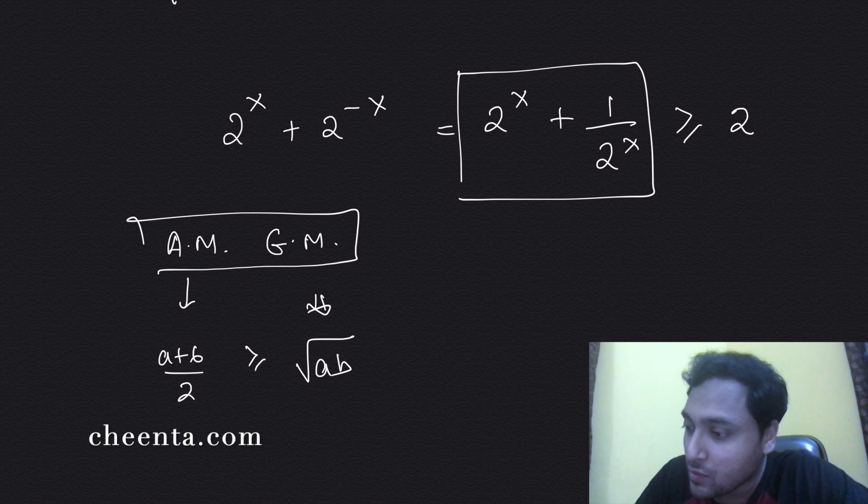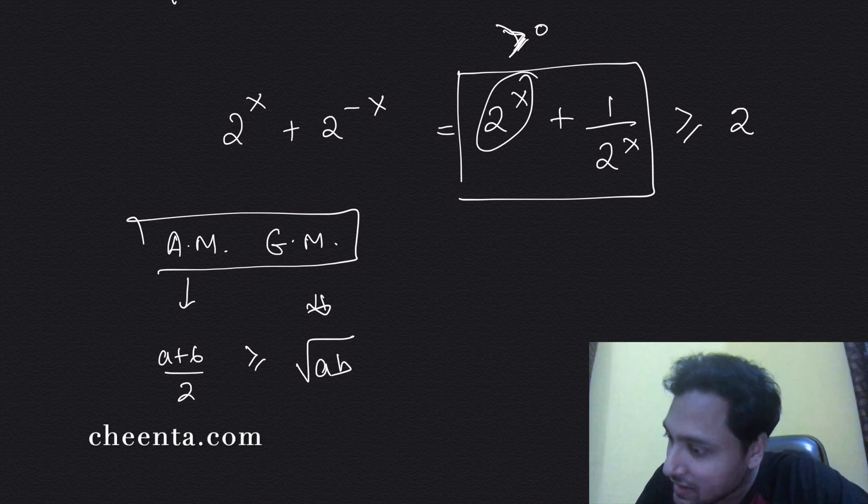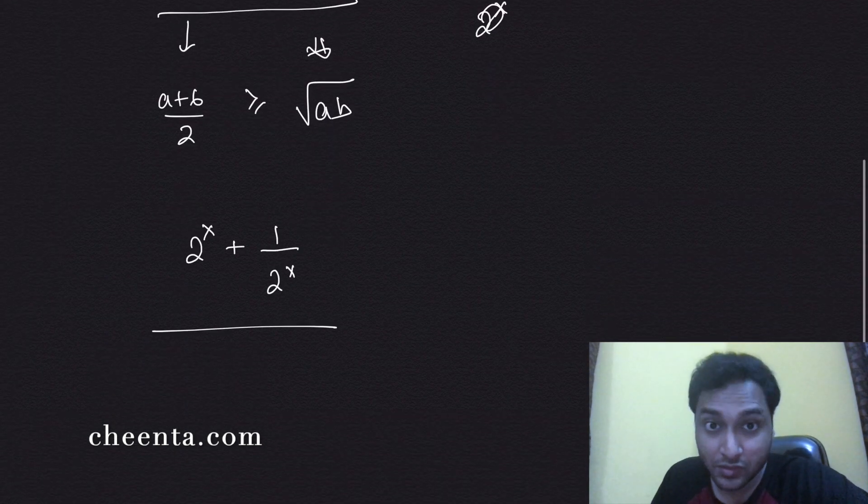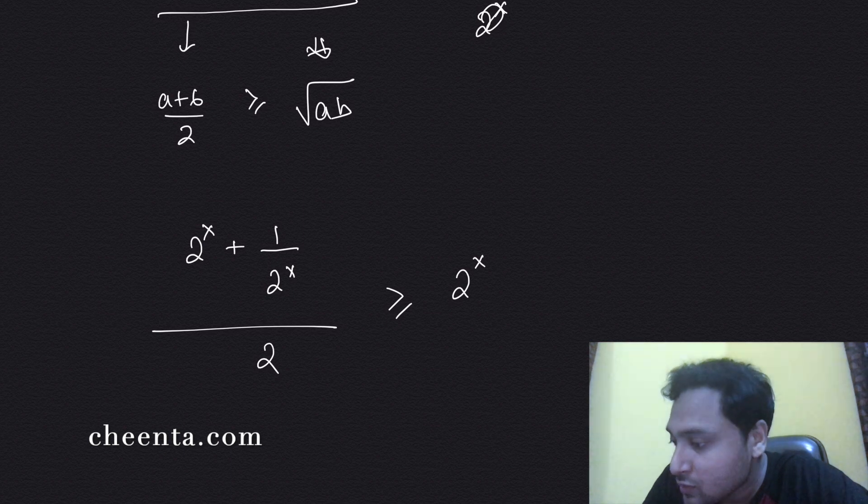Of course, 2^x is always positive, so we are covered there. In fact, it's greater than zero, and 1/(2^x) is also greater than zero, so you can apply that here. 2^x plus 1/(2^x) divided by 2 - you take the arithmetic mean - that is greater than or equals to the geometric mean, which is the square root of 2^x times 1/(2^x).